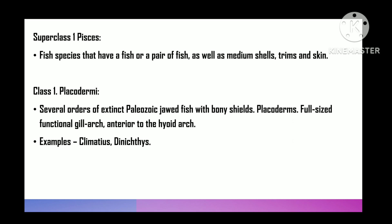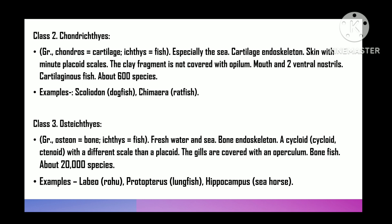Super class 1 is Pisces — fishes or fish-like aquatic forms with paired as well as median fins, gills, and scaly skin. Class 1 is Placodermi — several extinct orders of primitive, earliest jawed fishes of Paleozoic, with body plated. Placoderms have gill arcs with hyoid arc. For example, Climatius.